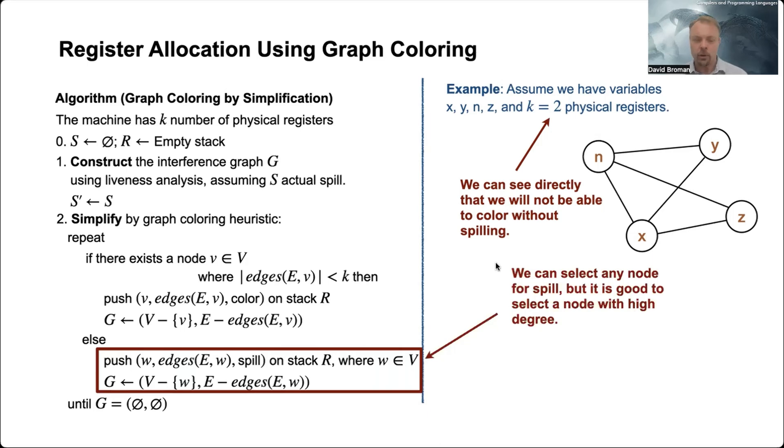But I mean, it's heuristic, so you never know. So we select something here, and we say that that is W. And then we just push this on the stack. You see here that we have W, and now we tag it to be spilled. So that's the main difference.